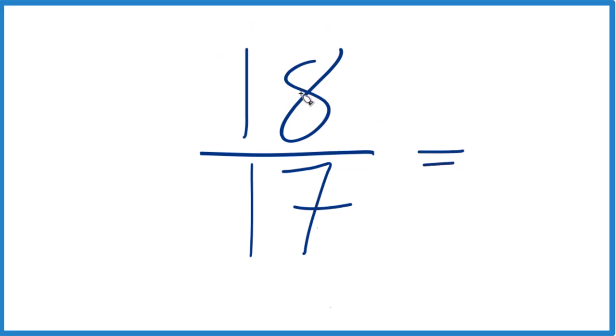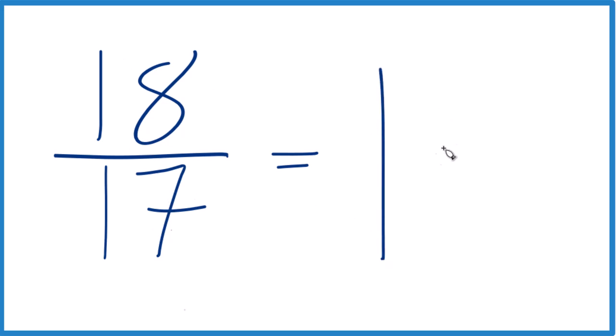17 goes into 18, you could say 1 times 17, that's 17, and we just have 1 left over, and we keep the denominator the same.